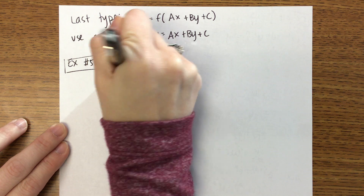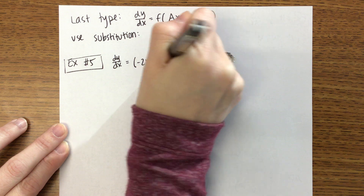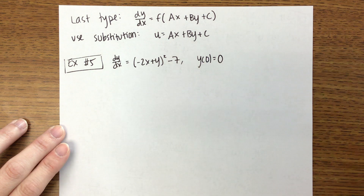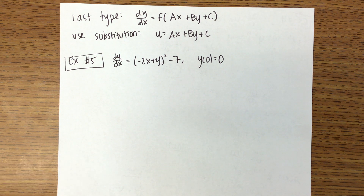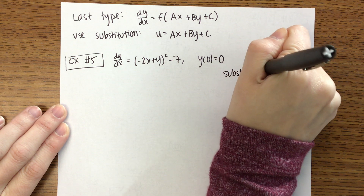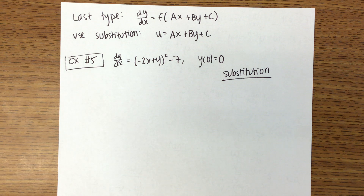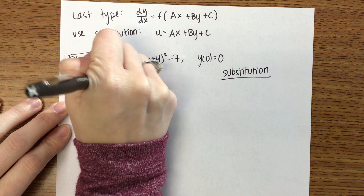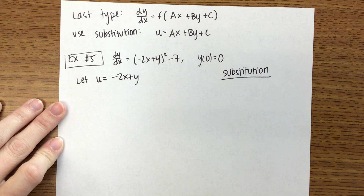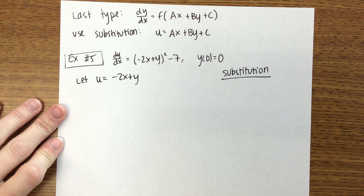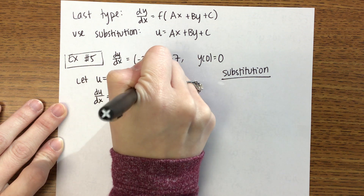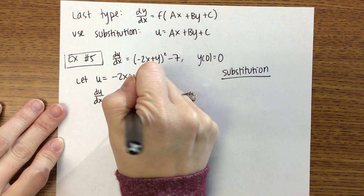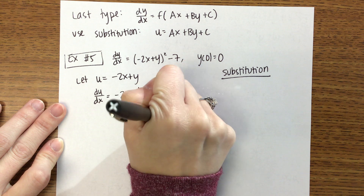For our last example we have dy/dx equals the quantity (negative 2x plus y) squared minus 7, with initial condition y(0) equals 0. One thing to note: on your test, anytime you are solving an equation you have to tell me what kind it is — for this one I would want you to write that you're using a substitution. So in this case our u is going to equal negative 2x plus y, giving us u squared minus 7 which is friendlier to solve. You need du/dx, which is negative 2 plus dy/dx — again it's like implicit differentiation — so dy/dx equals du/dx plus 2.